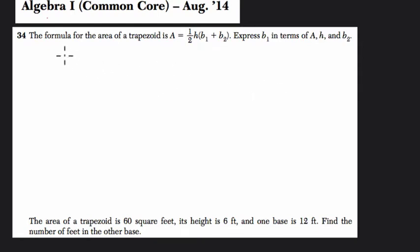Let's start by reading this question. It says the formula for the area of a trapezoid is A equals, and I like to write these out as I'm going, 1 half times the height times base 1 plus base 2. Express B1 in terms of A, H, and B sub 2.